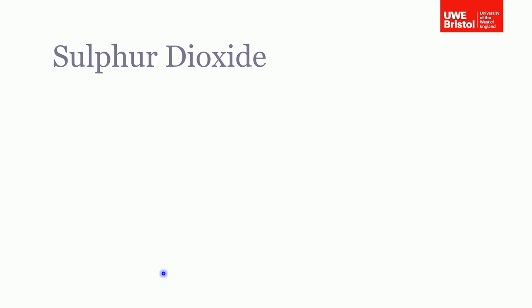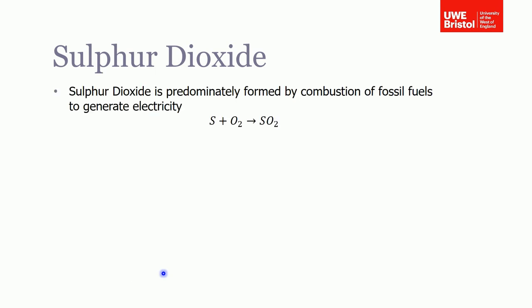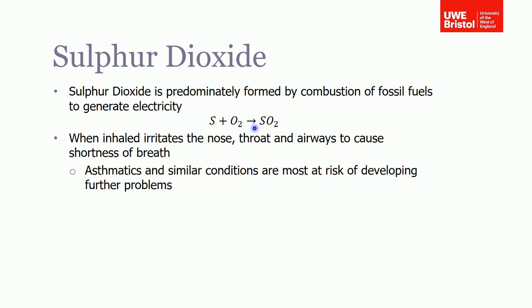Lastly then, sulfur dioxide. Again, this is predominantly formed by combustion of fossil fuels to generate electricity. So coal is particularly a big producer of sulfur dioxide due to the sulfur that's in the fuel. It is basically just the oxidation of the sulfur, so the sulfur reacts with the oxygen to give you sulfur dioxide, which is SO2.